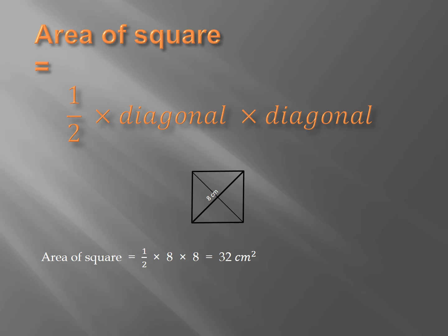Now, you have a new rule for the area of square using the diagonal. Area of square equals half times diagonal times diagonal, because the two diagonals are equal. So, if we have a square whose diagonal is 8 cm, area of square equals half times 8 times 8 equals 32 cm².